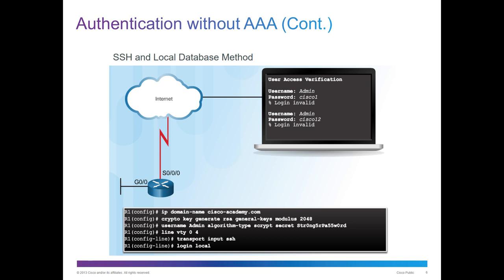With SSH, you typically need a domain name and you need to generate a key pair — in this example, an RSA key pair. You also need to set up a user and the appropriate password for that user. We can be even more secure with line VTY. Notice transport input — we are limiting it to just SSH, no longer allowing Telnet. And we are doing a login local, which tells the device that the AAA database is local.